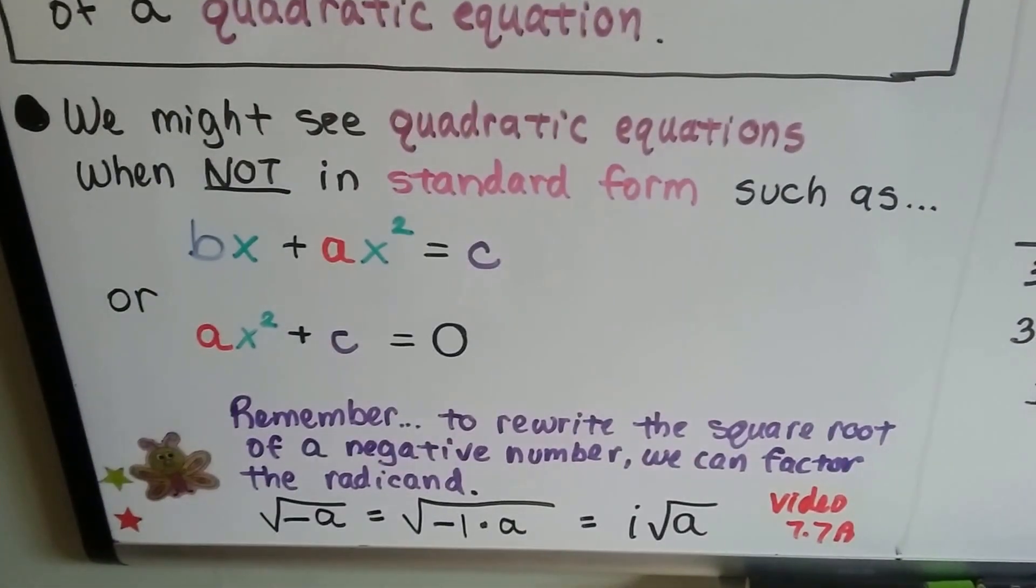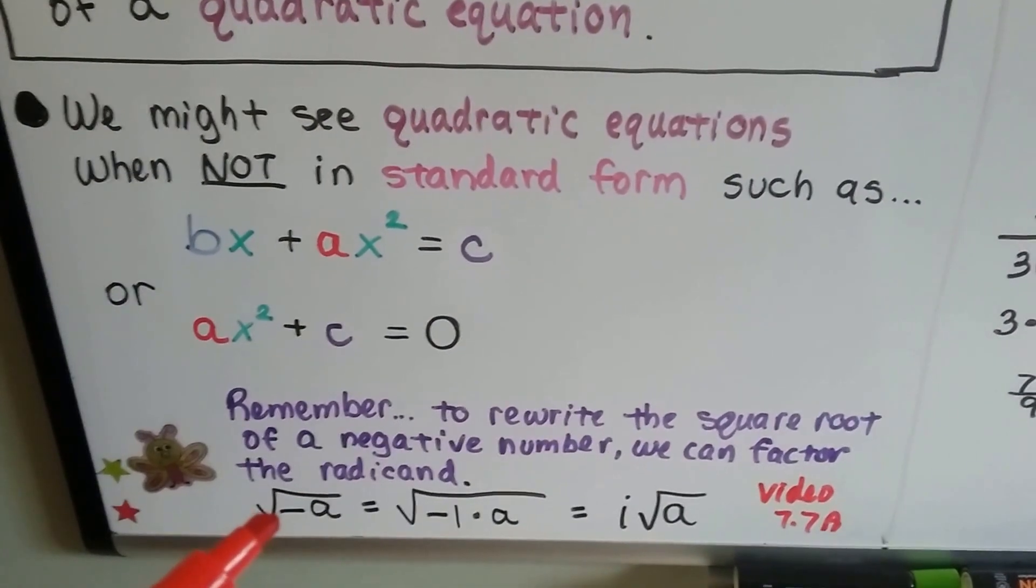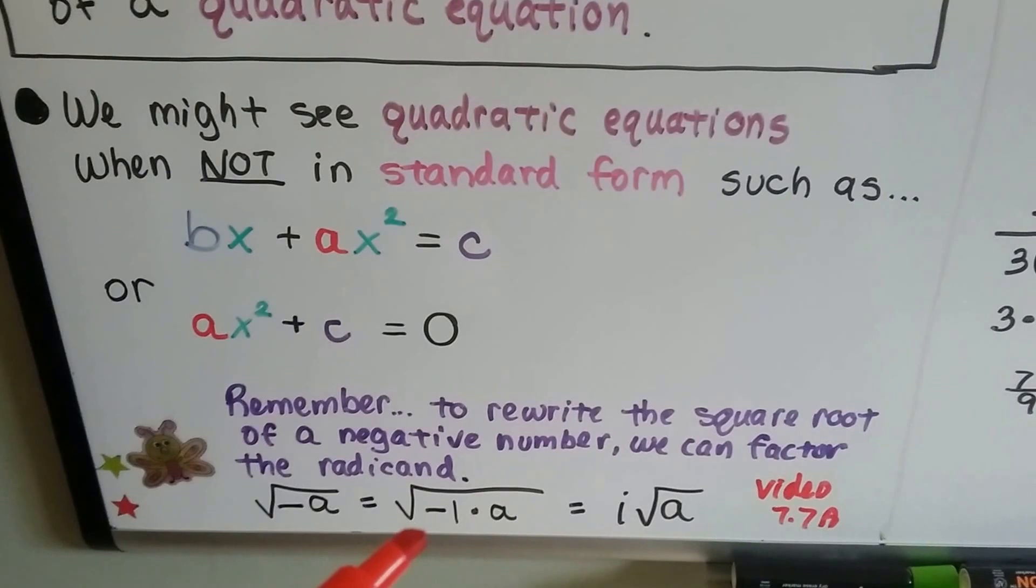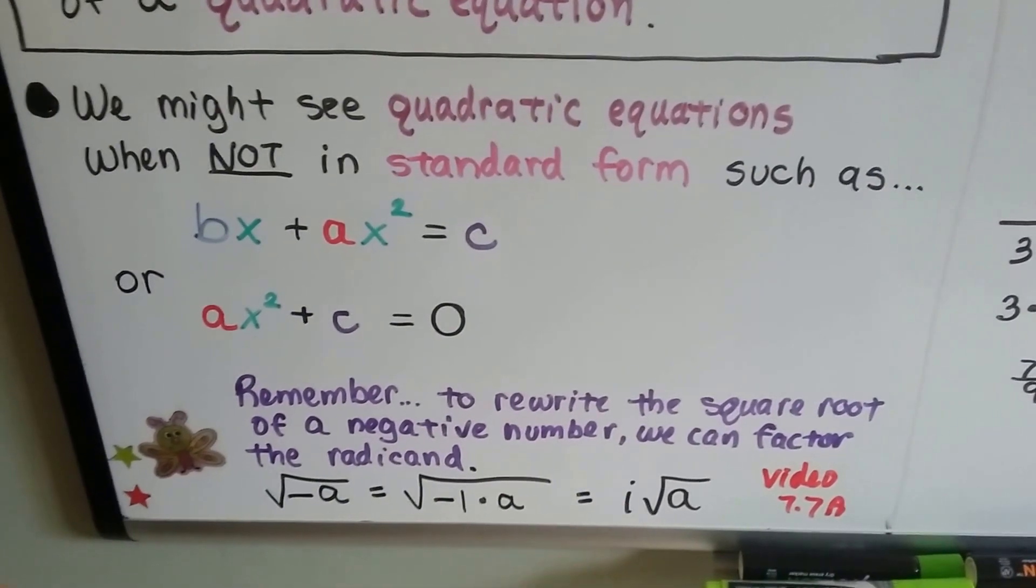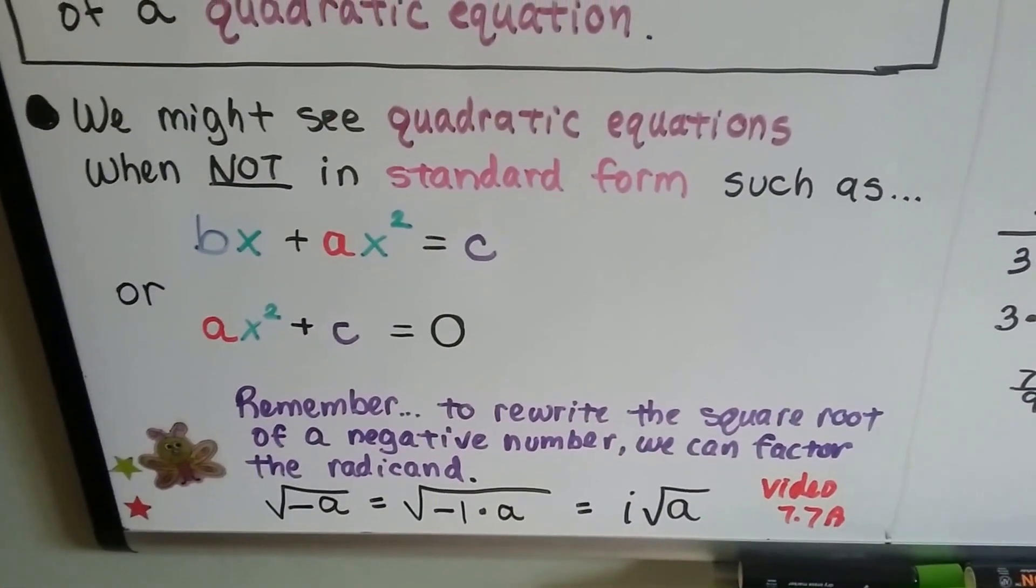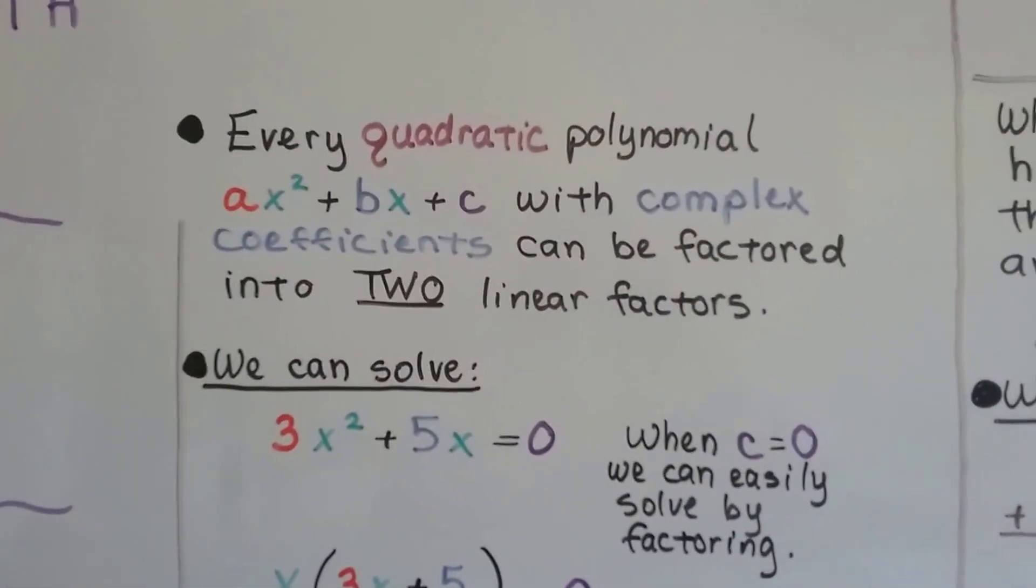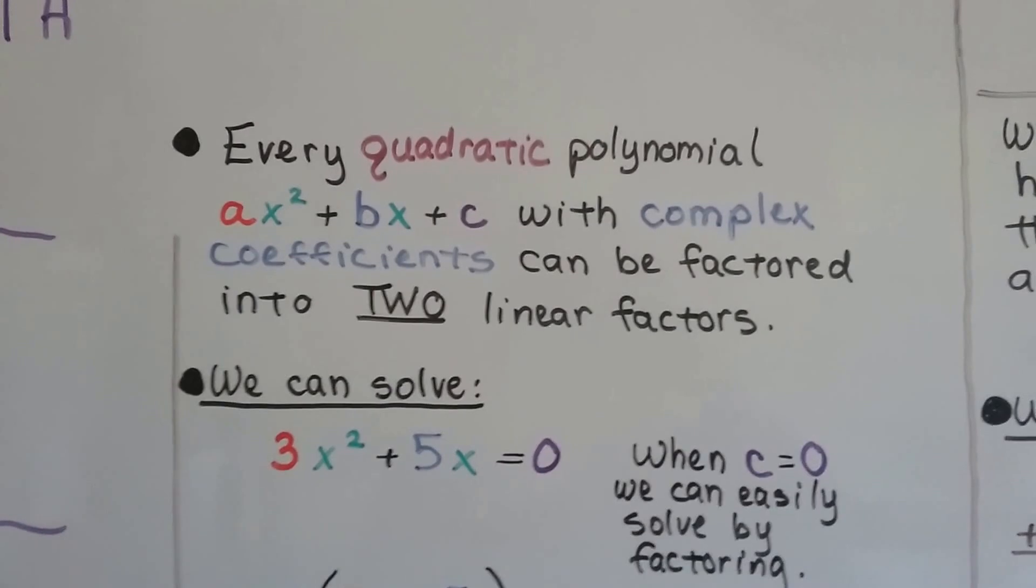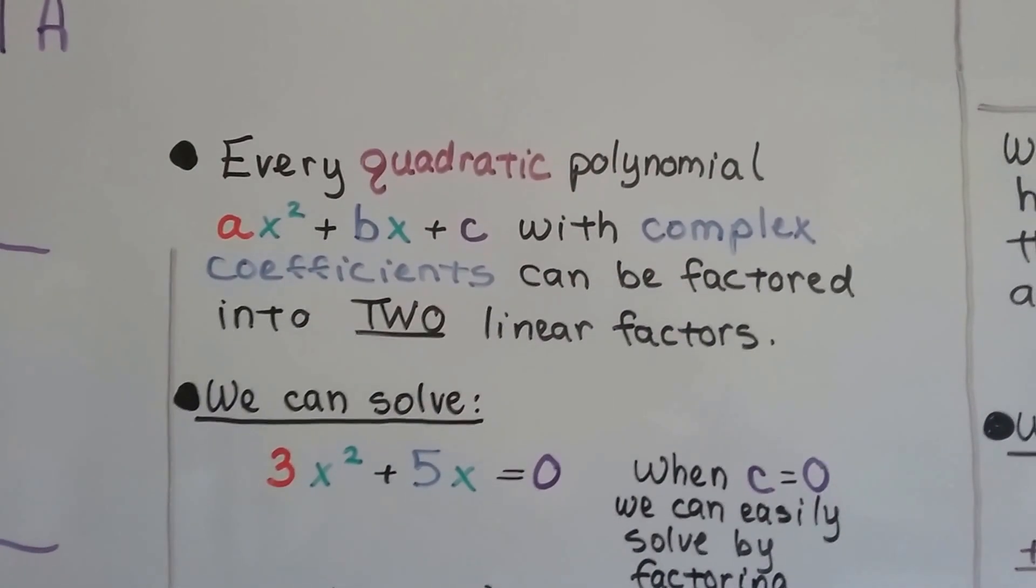And remember to rewrite the square root of a negative number, we can factor the radicand. So if we have the square root of negative a, we can factor it as negative one times a. And that will give us our buddy the i, won't it? We did that in 7.7a, and there will be a link to that one too in this description. So every quadratic polynomial, ax squared plus bx plus c with complex coefficients, can be factored into two linear factors.